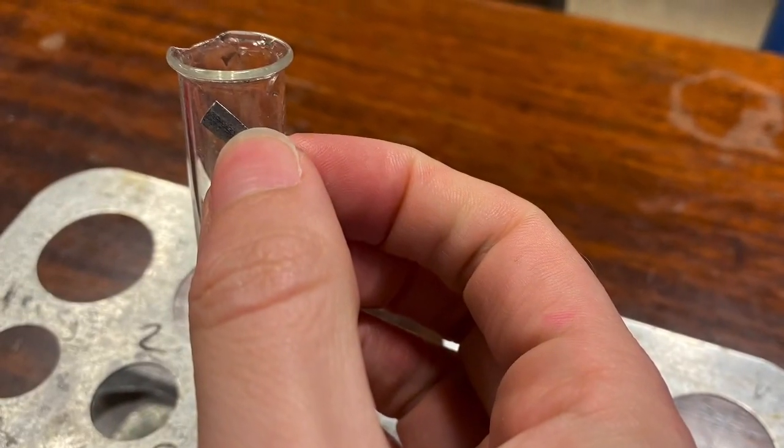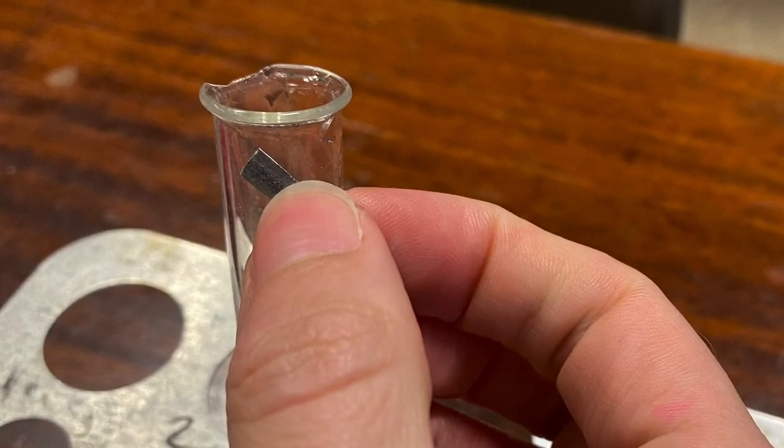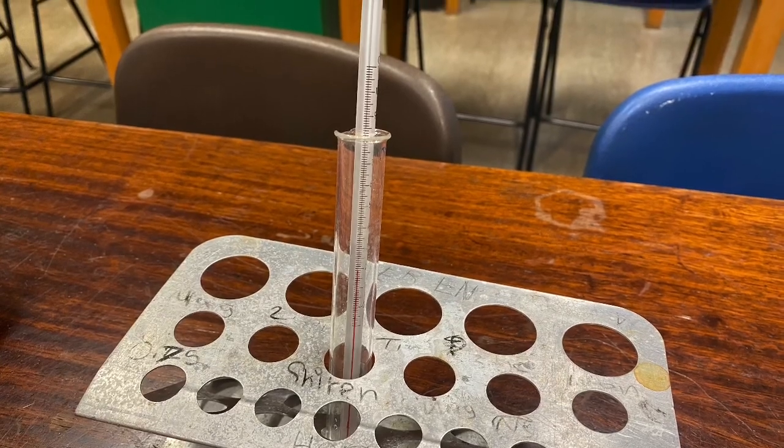Next, add a small strip of magnesium to the test tube. You may need to take the thermometer out to do this. Use the thermometer to see what happens to the temperature of the reaction during the experiment.